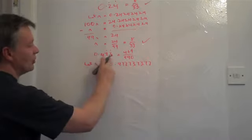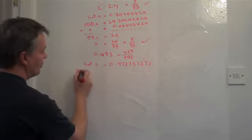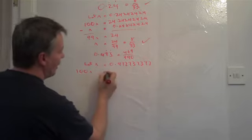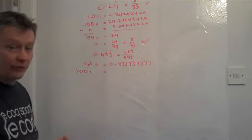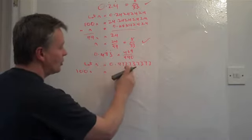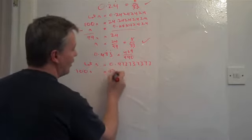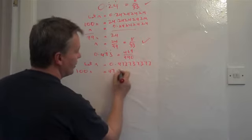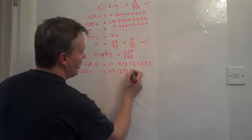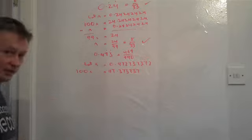And because there's two recurring points, I'm going to multiply by 100. Or 100N equals, and I'm going to move the decimal place over by two points. 47.373737 and so on.